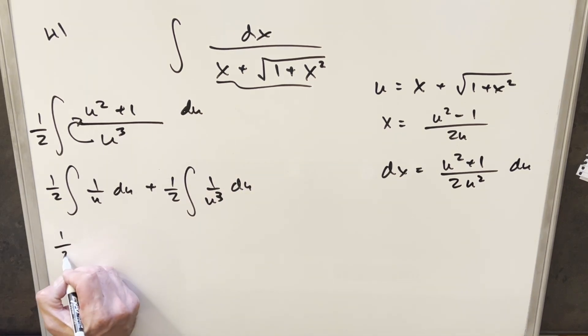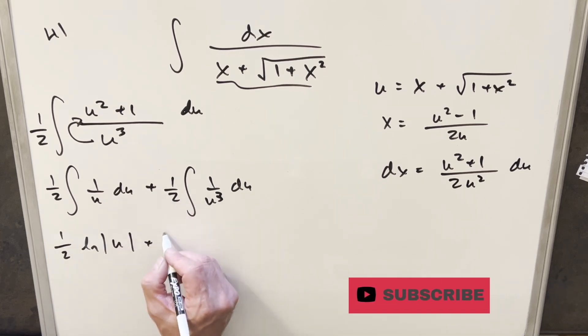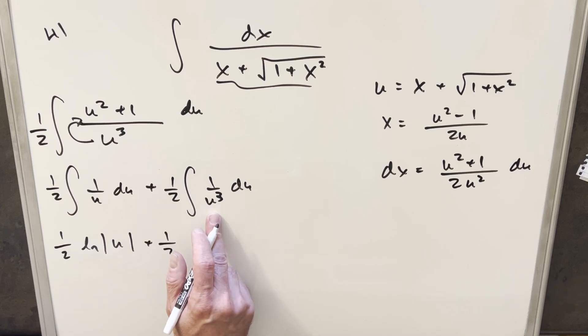Just go ahead and integrate. This is going to become 1 half. This is going to be natural log absolute value of u. Then here, when we do this, we have 1 half up front. Integrating this with the power rule, this is going to become minus 1 over 2u squared.